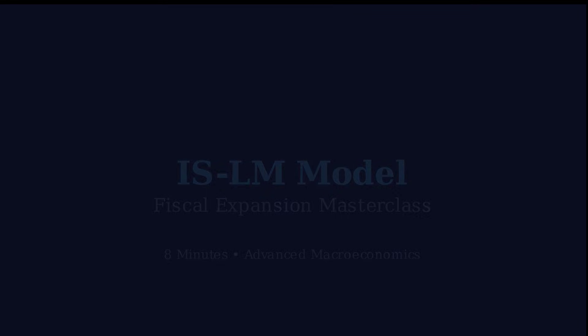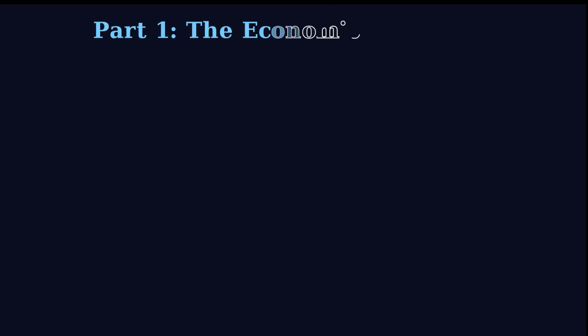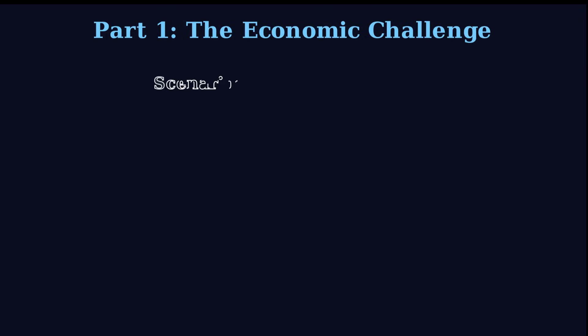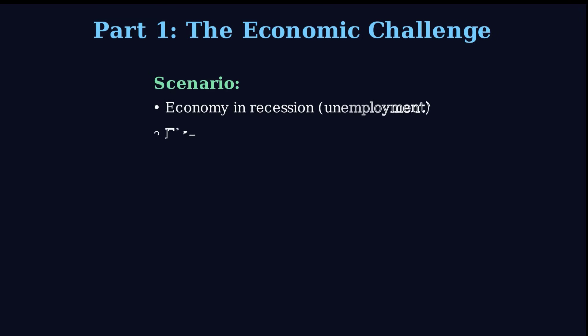Our mission today is custom-tailored for you, the listener. We're going to analyze the impact of a very specific kind of policy. Picture this scenario: the government decides to significantly increase its spending — we call that G. And here's the critical detail: they finance this entire spending increase just by issuing bonds. So no tax changes at all. Zero changes to taxation. That's key. And before we pull that lever, we have to set the stage. The source material gives us four critical conditions we have to assume.